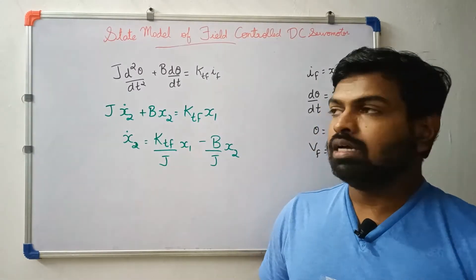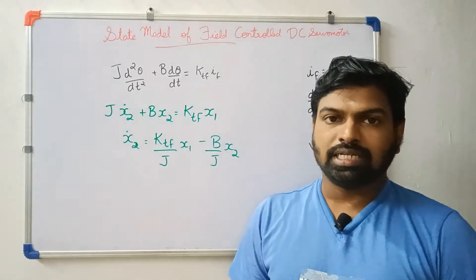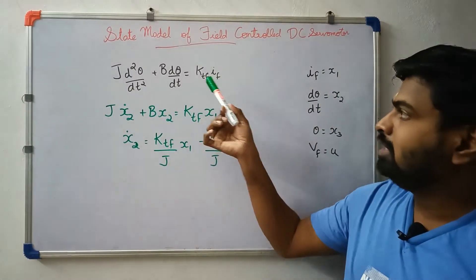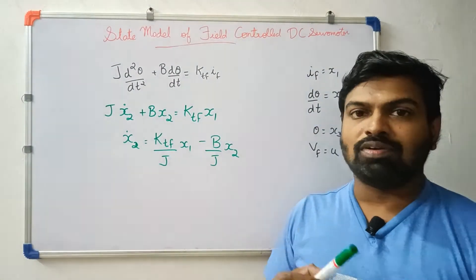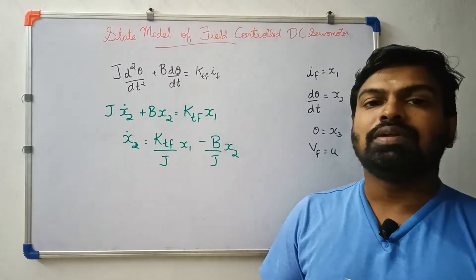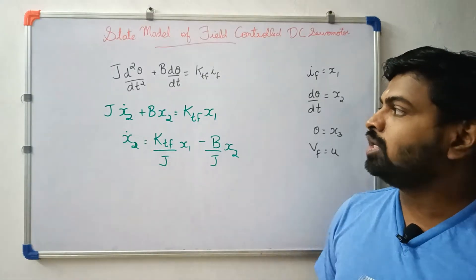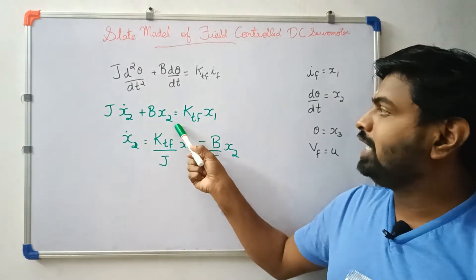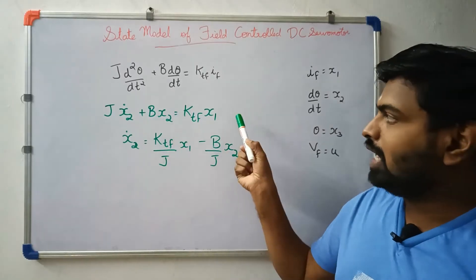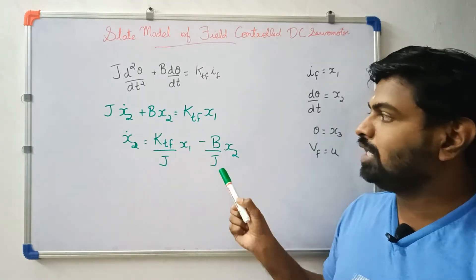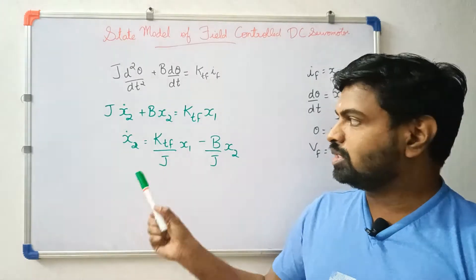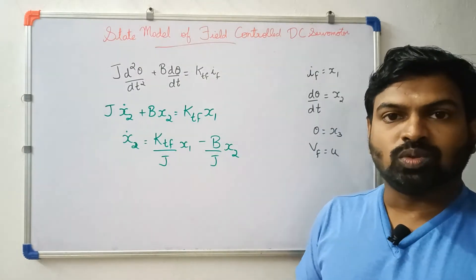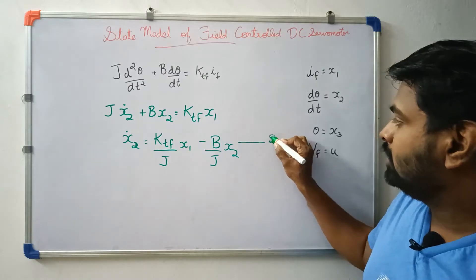Now we have the second equation. The second equation is: j·d²θ/dt² + b·dθ/dt = ktf·if. We let dθ/dt = x2, so the first derivative is x2 and the second derivative is x2_dot. Then: j·x2_dot + b·x2 = ktf·if. The second state equation is: x2_dot = (ktf/j)·x1 − (b/j)·x2.